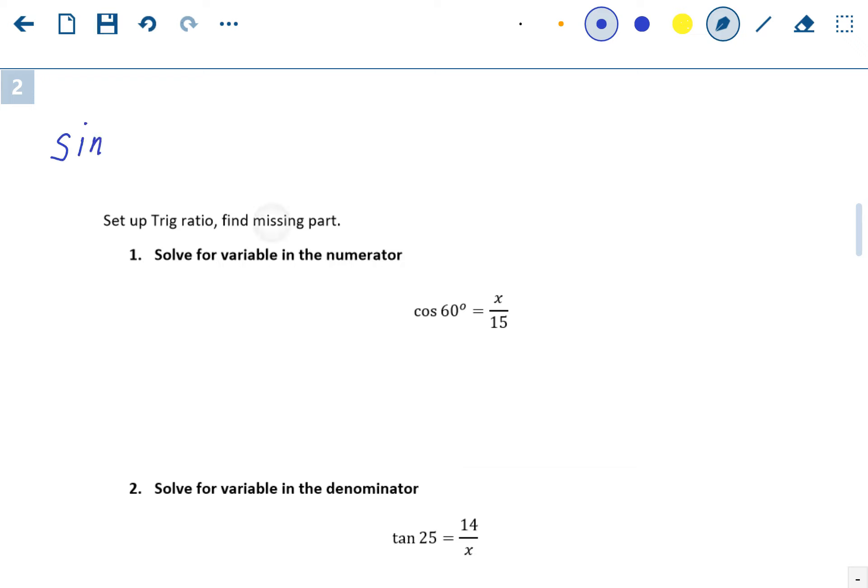We'll start with sine. The sine of an angle, usually we mark the angle as theta or alpha or beta, some Greek letter. The sine of theta is always going to be the ratio of the opposite side divided by the hypotenuse side. So sine is opposite over hypotenuse.